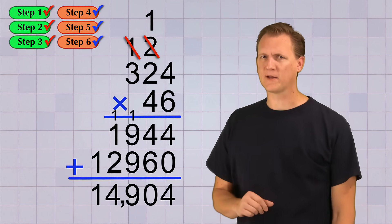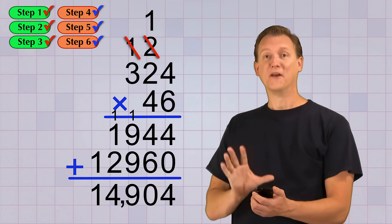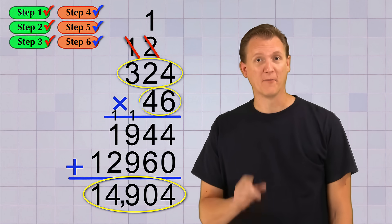Let's double check with a calculator to make sure we got it right. Alright, let's see here. Yep, that's exactly what you get when you multiply 324 by 46.